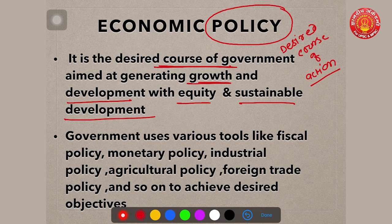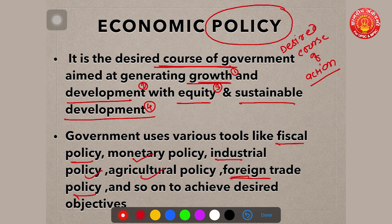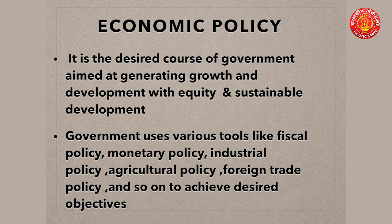The government wants to achieve four things: economic growth, economic development — distributing growth equally among all stakeholders — equity, and sustainable development with care for the environment. To achieve this economic policy, the government uses various tools like fiscal policy, monetary policy, industrial policy, agriculture policy, and foreign trade policy, all of which we will study one by one.